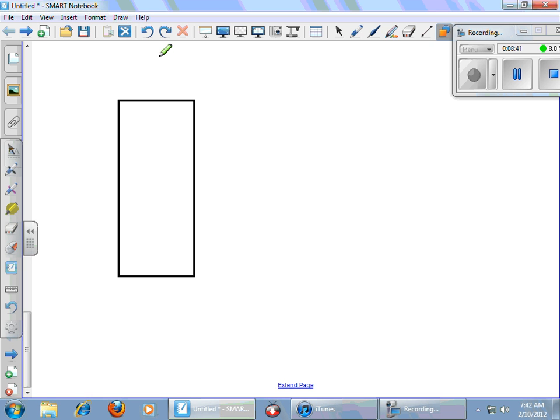One thing I do want to review with you really quick is perimeter. Okay. Let's say that this rectangle was 3x plus 4 centimeters wide, and it was 7x plus 2 centimeters long. All right.